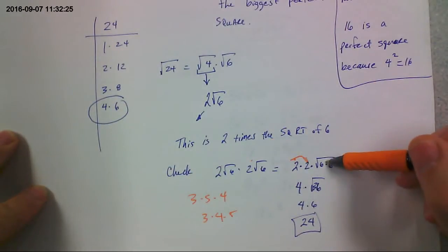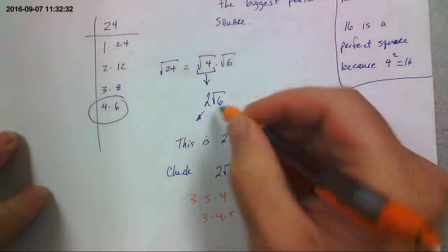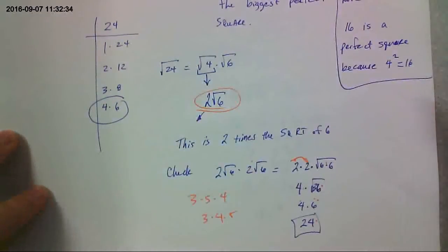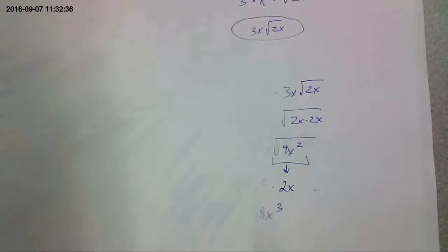So I'm going to put the rational numbers together right here. 2 times 2 is 4. The square root of 6 times the square root of 6 is the square root of 36. The number squared of 36 is 6. 4 times 6 is 24. This number right here times itself is 24. So I know I'm right.